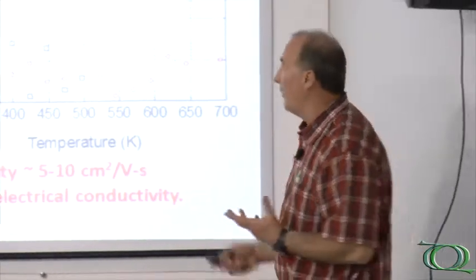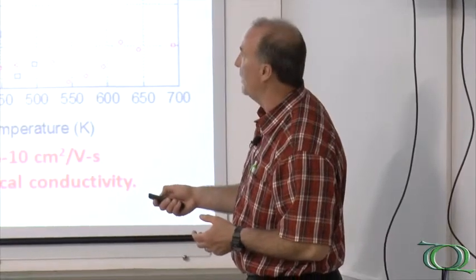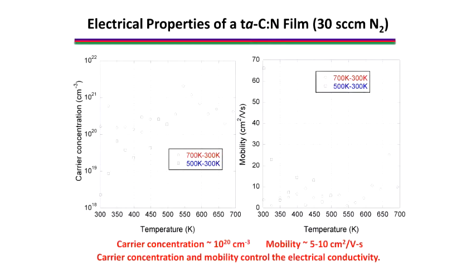If you look at the Hall effect data, this is a plot of the carrier concentration and this is a plot of the mobility of those carriers as a function of temperature. The electrical resistivity is a product of the mobility and the charge carrier concentration. A little bit noisy in these data but generally speaking the red dots around 10 to the 20th per cubic centimeter in terms of carrier concentration. And if we look over here at the mobility it's about 5 to 10.